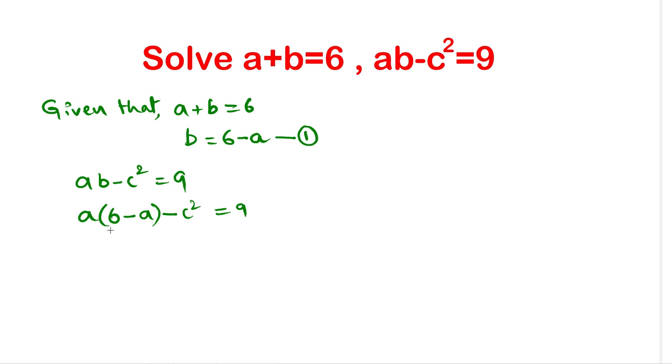Open the brackets, that means distribute a into 6, 6a, then a into negative a, that is minus a squared, then minus c squared, bring this 9 to left side, so that will be minus 9 equal to 0.